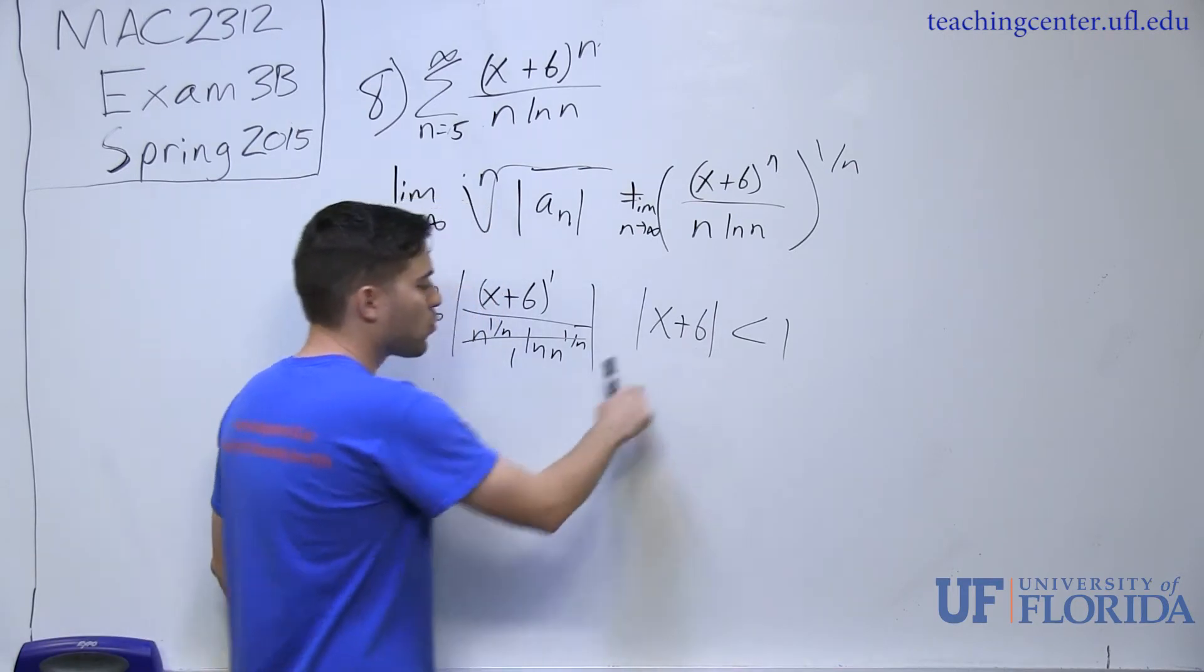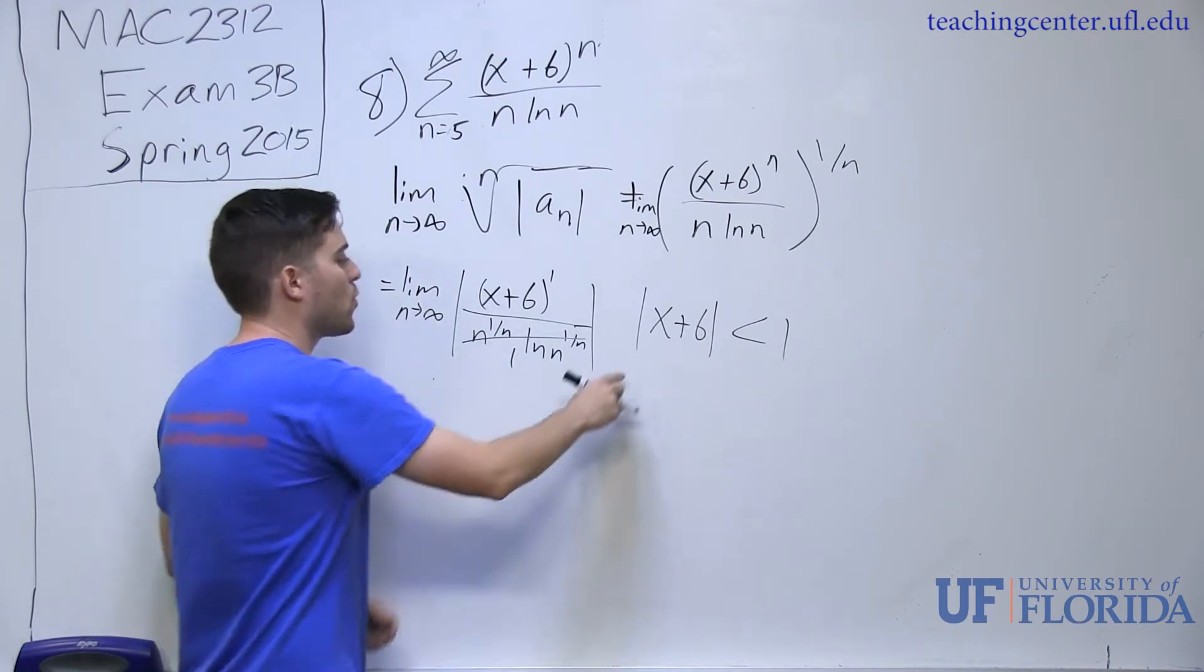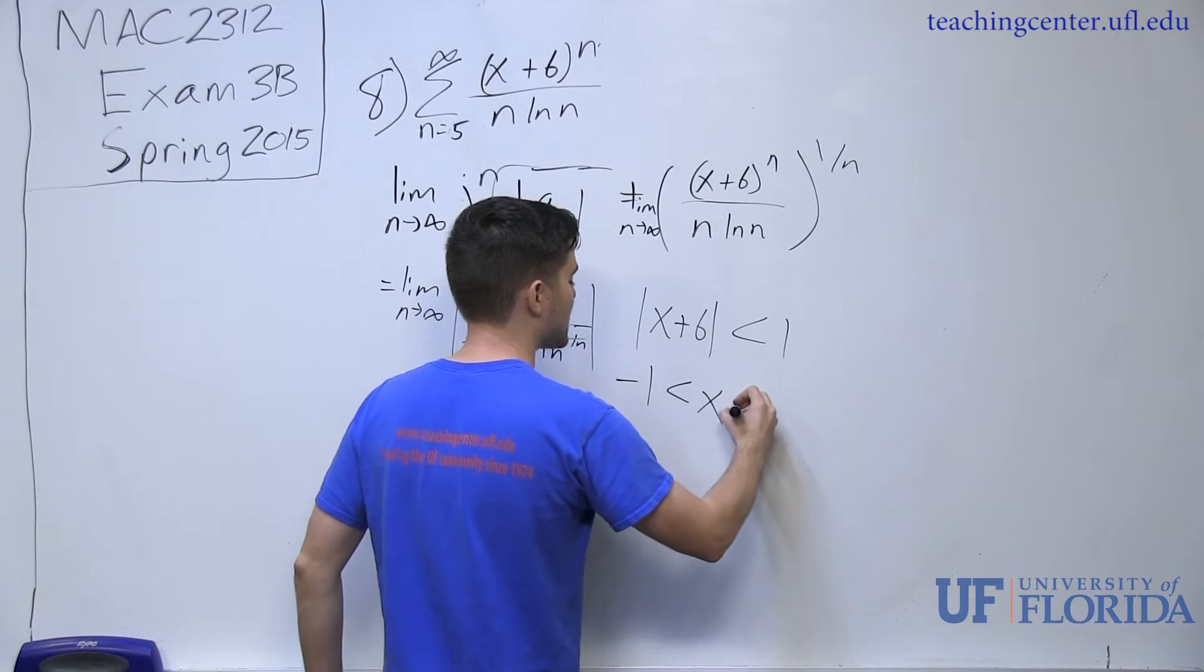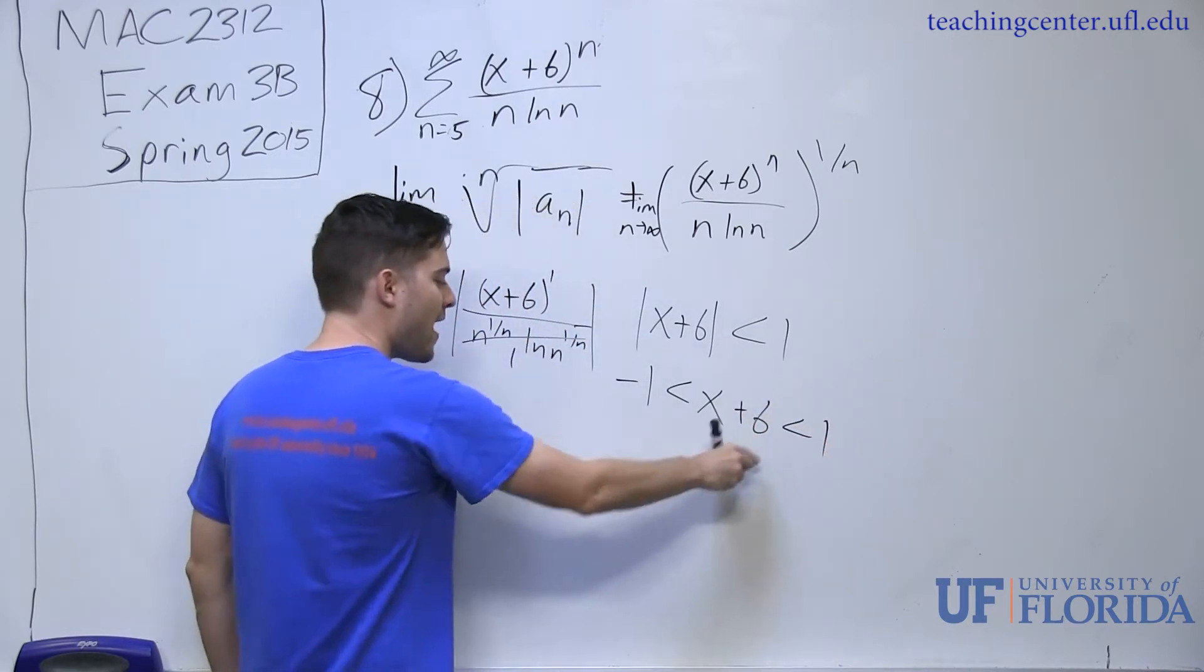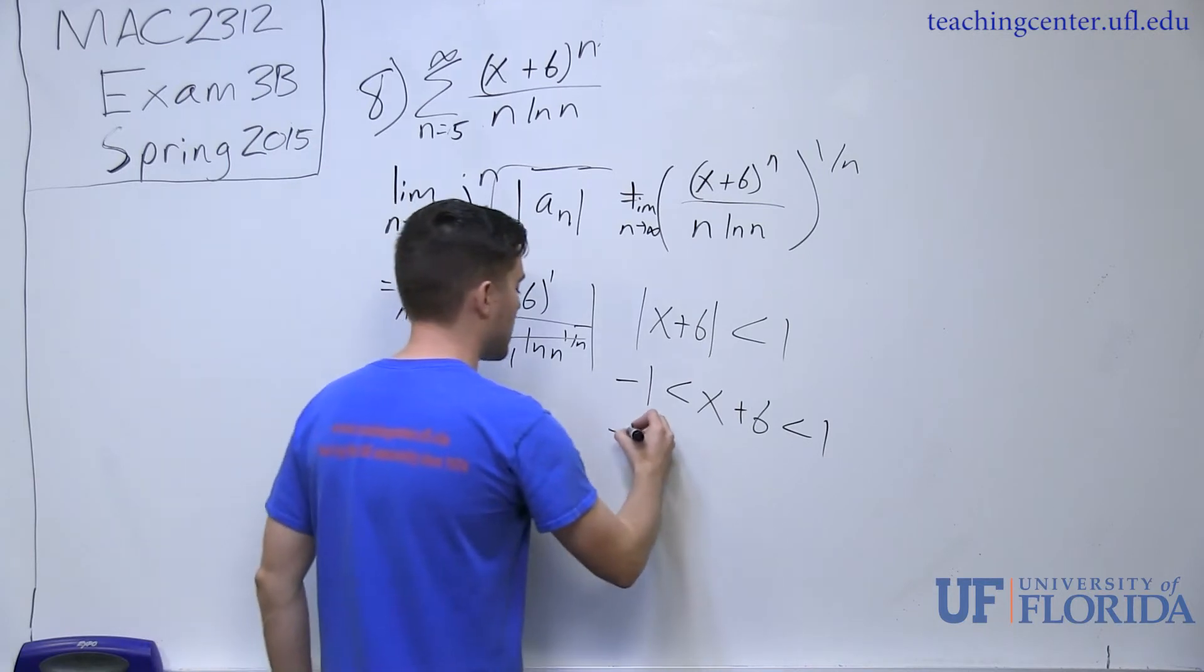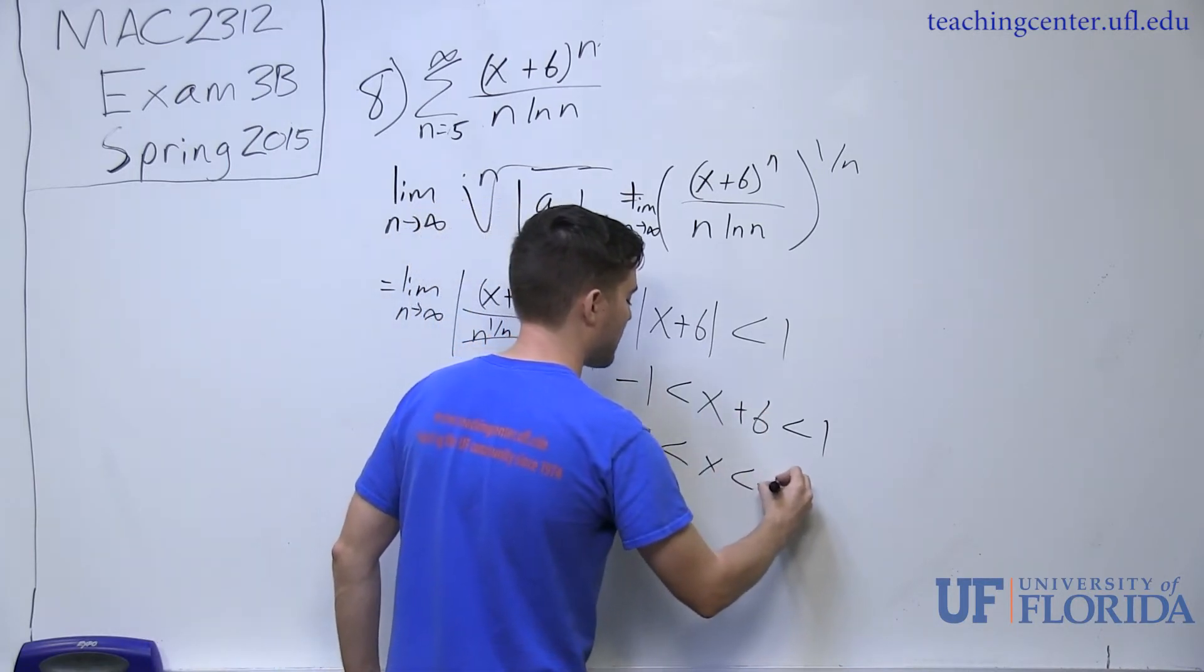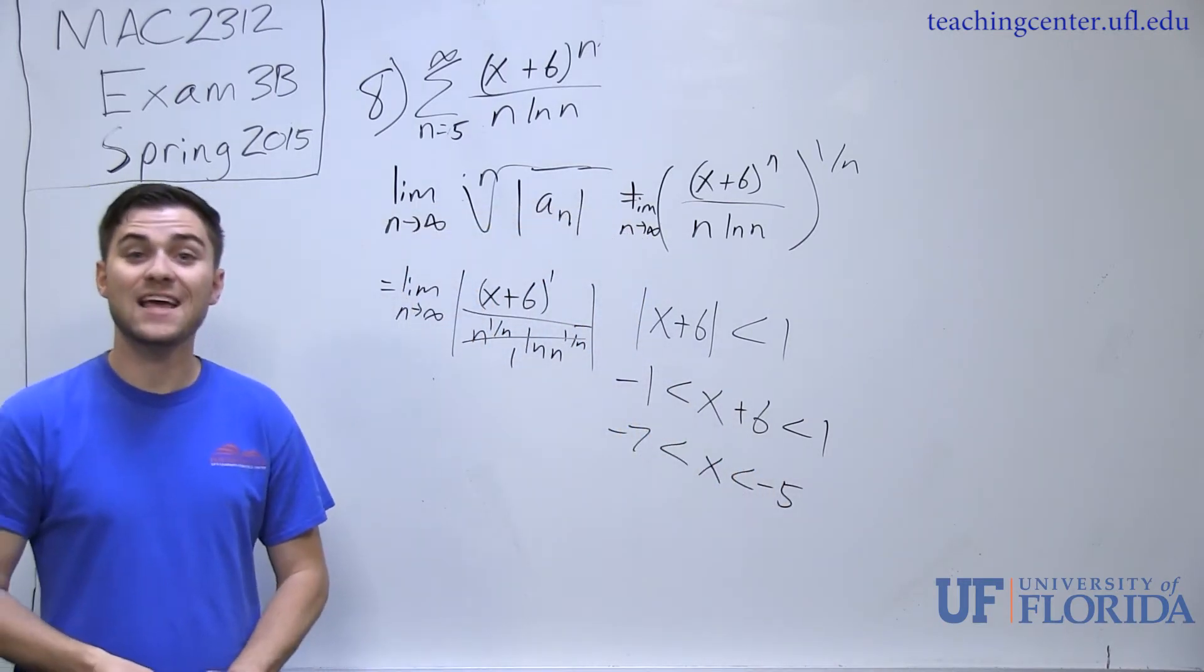According to the rules of absolute value, I can put in a positive or negative value and still get the same answer. What I can do is I can actually expand this into an interval. I can say negative 1 is less than x plus 6 is less than 1. If I go ahead and subtract over my 6, I can get x by itself with negative 7 is less than x is less than negative 5.